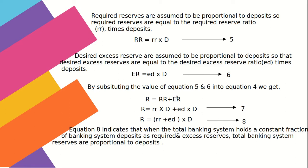Required reserves are assumed to be proportional to deposits, so required reserves = RR × D, where RR is the required reserve ratio — essentially the cash reserve ratio. Similarly, desired excess reserves are proportional to deposits, so excess reserves = ER × D. Substituting, we get R = (RR + ED) × D, indicating that total banking system reserves are proportional to deposits.